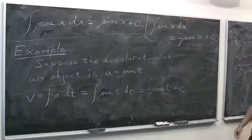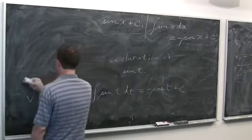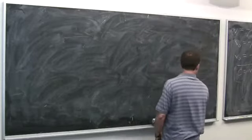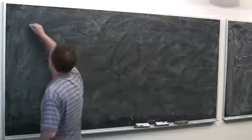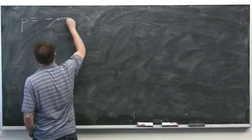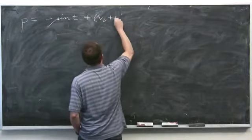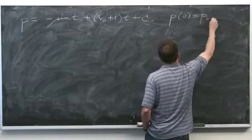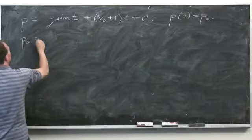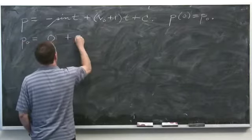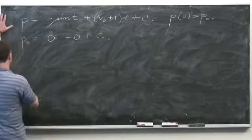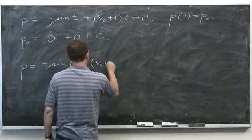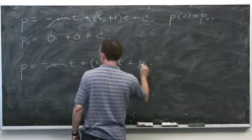The anti-derivative of cosine is sine, so we get minus sine of t plus (v₀ + 1) times t plus a constant. Plugging in the tautological initial data — position at time 0 is p₀ — gives p₀ equals 0 plus 0 plus c, so c equals p₀. Our solution for position is p equals minus sine of t plus (v₀ + 1)t plus p₀.